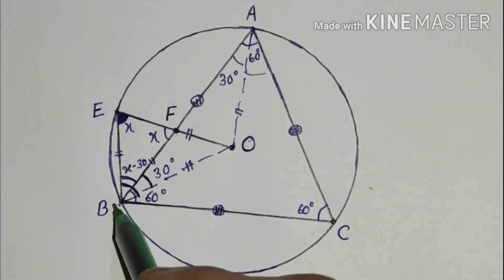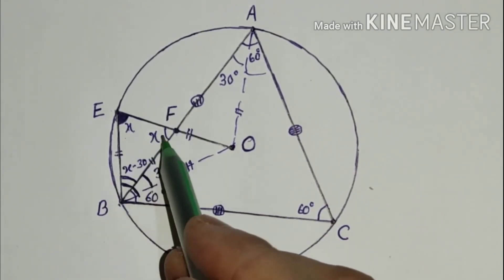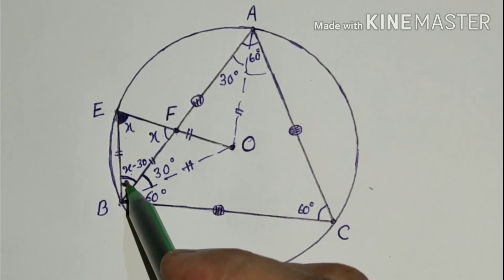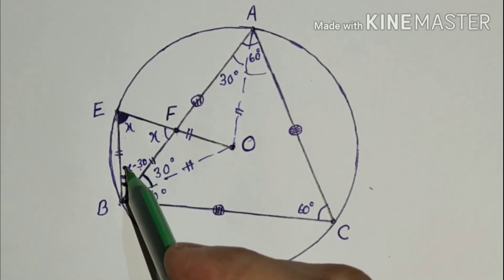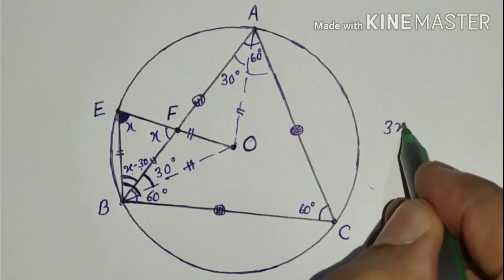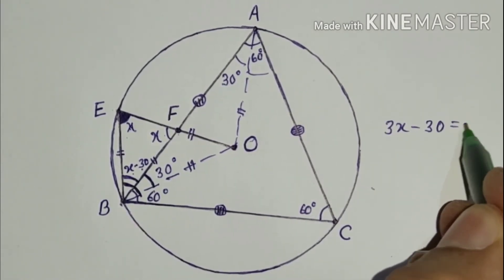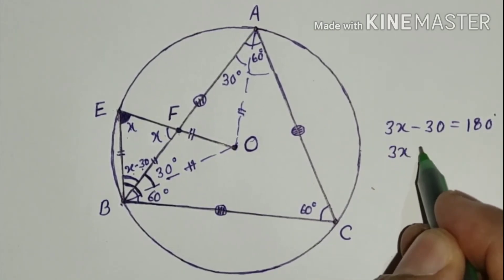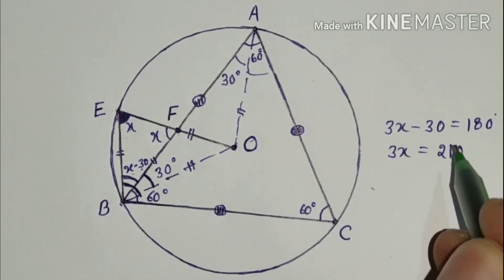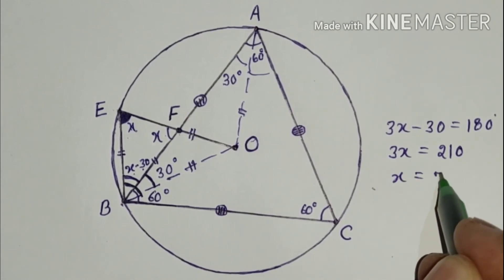Now for triangle BEF, sum of all these three angles will be 180. So X plus X plus X minus 30 will be 180. So 3X minus 30 is equal to 180, and 3X is equal to 210. Therefore X is equal to 70 degrees.